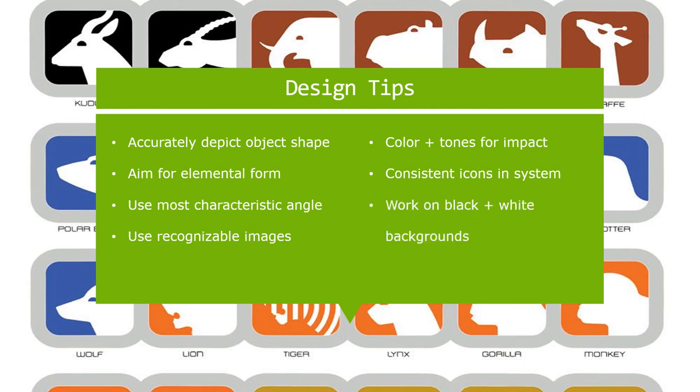Design tip seven: work on black and white backgrounds. The icon itself should work well on both a white and a black background — meaning it should work on either a light or a dark background. It should also work well at different scale sizes, because a pictogram is going to be used really small on a map, kind of big on a sign, and huge on a monolith. These visuals have to work at any scale and on a variety of backgrounds.